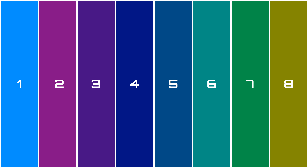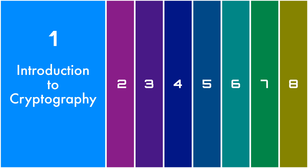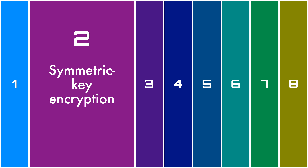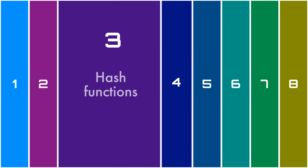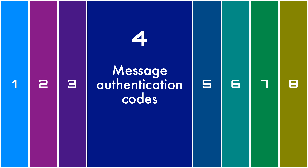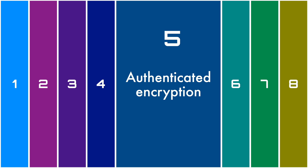The Crypto 101 Building Blocks course is comprised of 8 chapters. Chapter 1 will introduce the field of cryptography and present some fundamental concepts and terminology. We'll then move on to studying fundamental primitives in symmetric key cryptography: symmetric key encryption for confidentiality in Chapter 2, hash functions in Chapter 3, message authentication codes in Chapter 4, and authenticated encryption in Chapter 5.